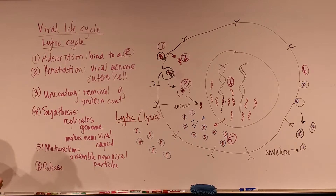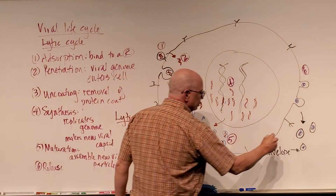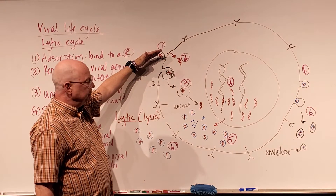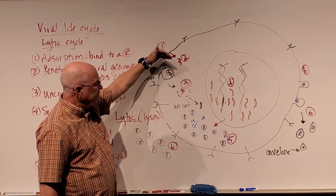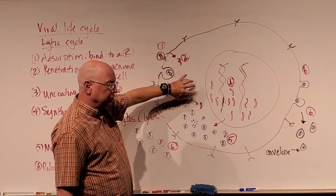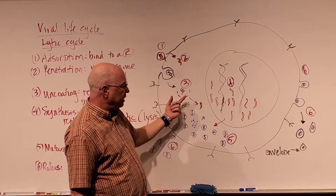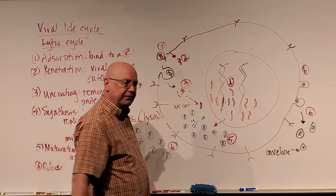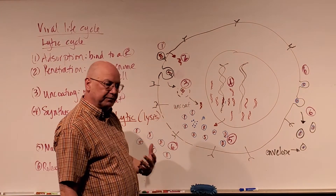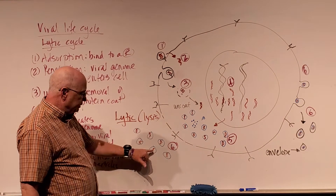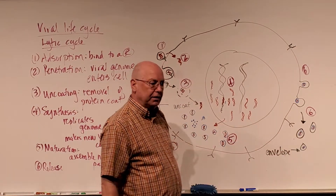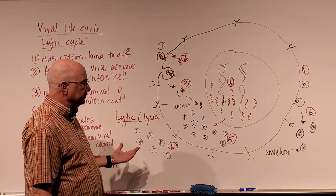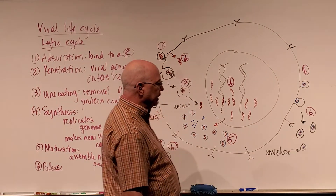Step six is release. A virion is an entire complete virus with the capsid, the protein, and the envelope. The release can be through lysis or through exocytosis. To summarize: adsorption — binds to a receptor on the host cell membrane; penetration — the virus or viral genome enters the cell; uncoating — removal of the protein coat; synthesis — new viral genome and viral proteins are made; maturation — assembly of the complete virion; and release — either through lysis (lytic cycle) or through exocytosis (enveloped viruses).